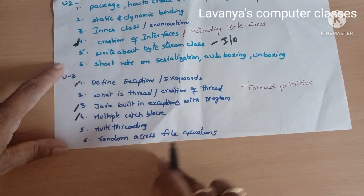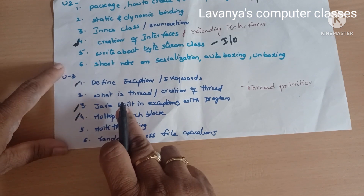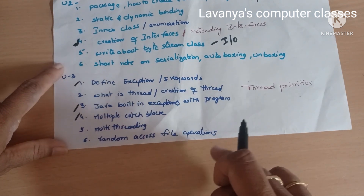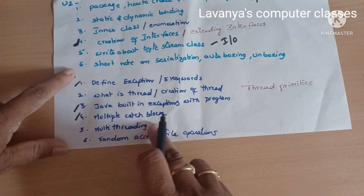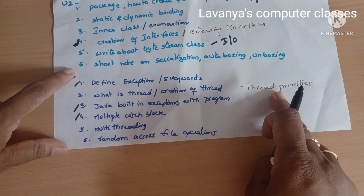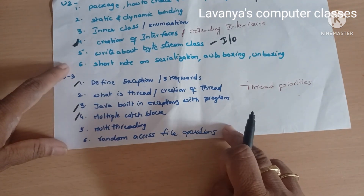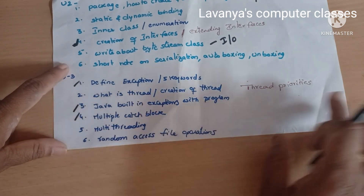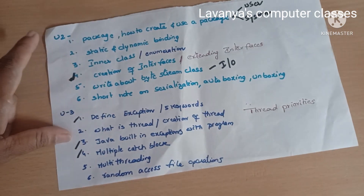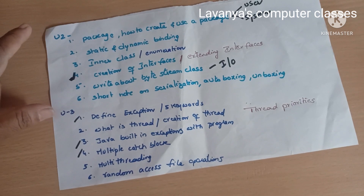For threads: what is a thread, how to create a thread, how to execute a thread, what is multithreading, and thread priorities. Next, files — explain about random access file organization. These are the main questions in Unit 3.